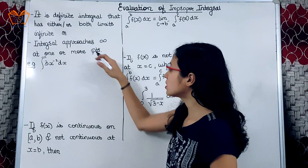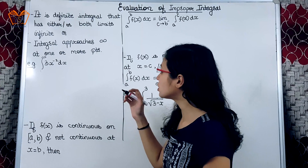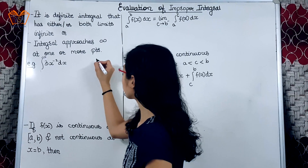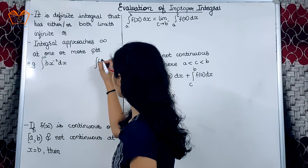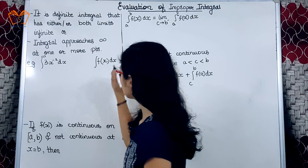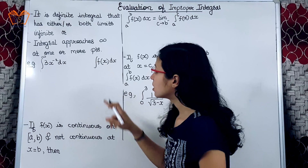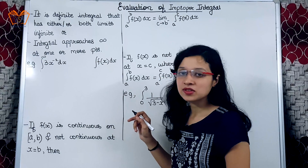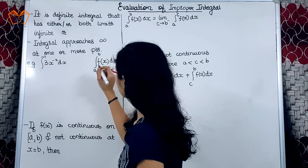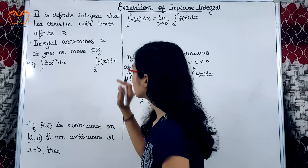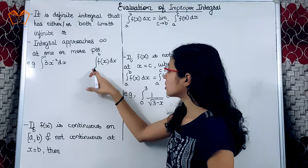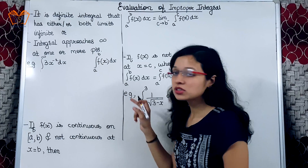Before we understand this definition, let us recall the two integrals we saw in the last two videos. The indefinite integral is of the form: integration of f(x) dx — that is, there are no limits specified. In the definite integral, the form was integration from a to b of f(x) dx, where the closed interval specified is a to b.